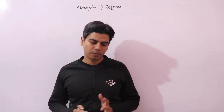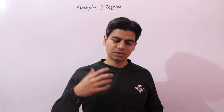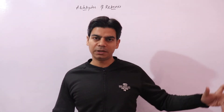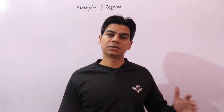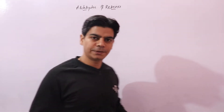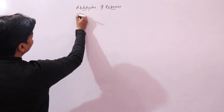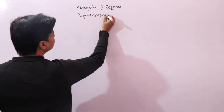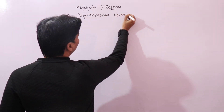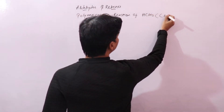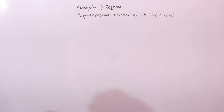In this video lecture we would be looking into some reactions of formaldehyde that are different from other aldehydes — reactions not given by other aldehydes. Mostly the reactions we are doing here are polymerization reactions of formaldehyde. We write formaldehyde as HCHO or CH₂O.